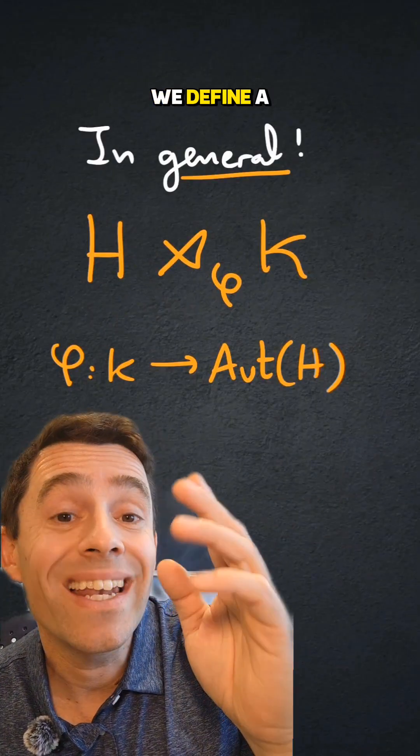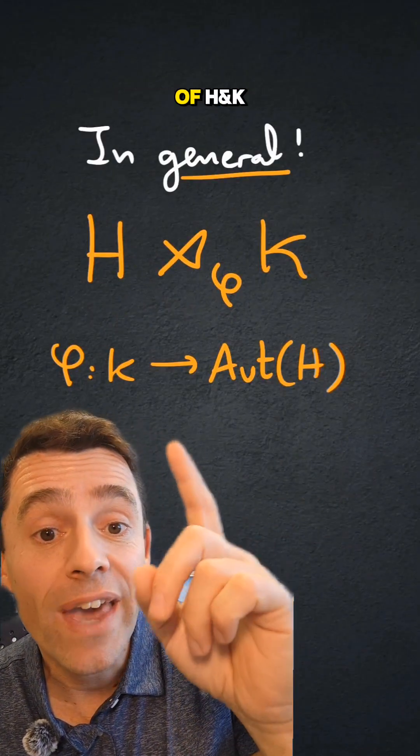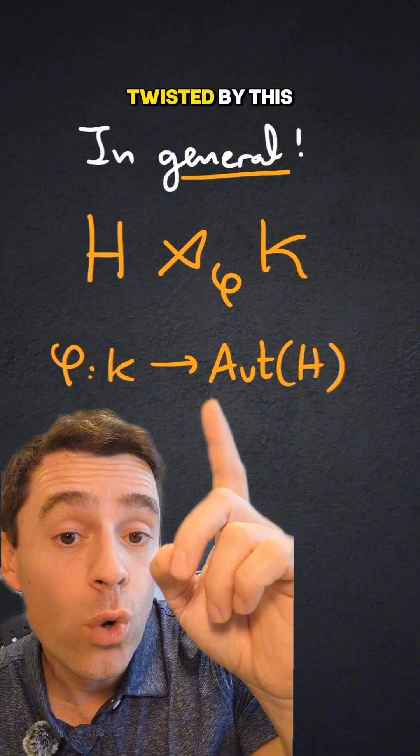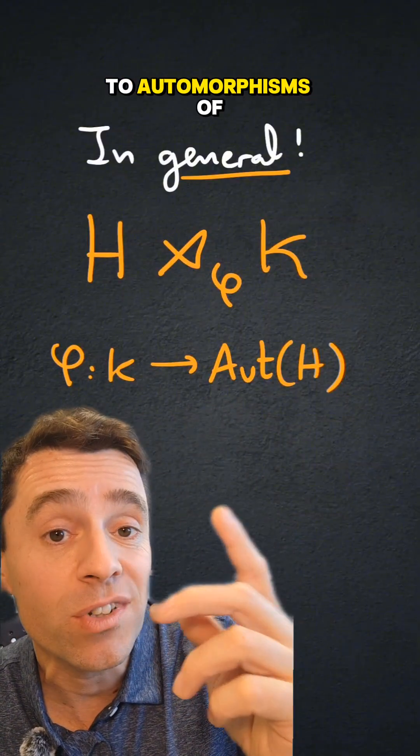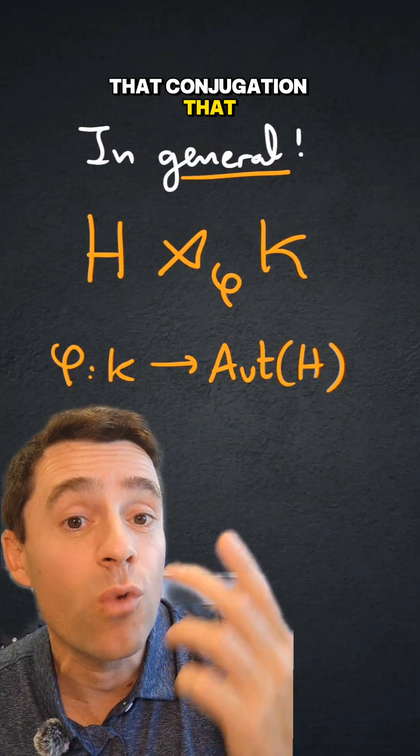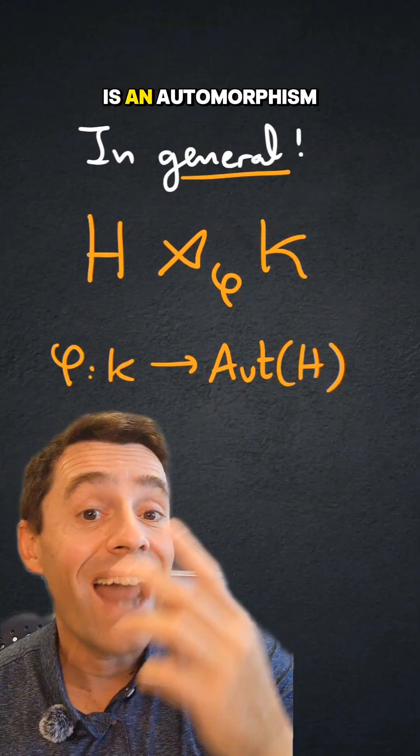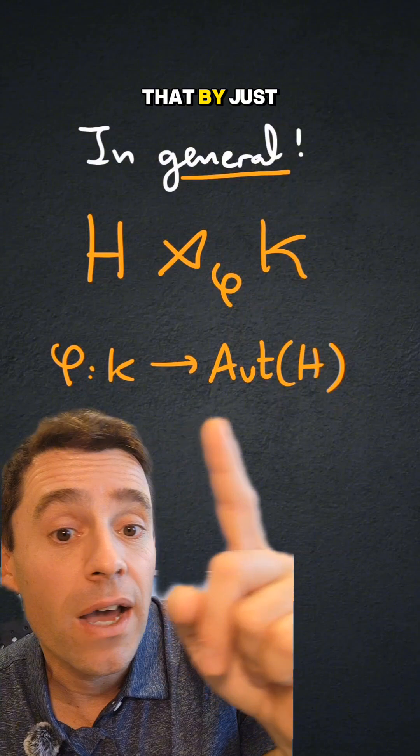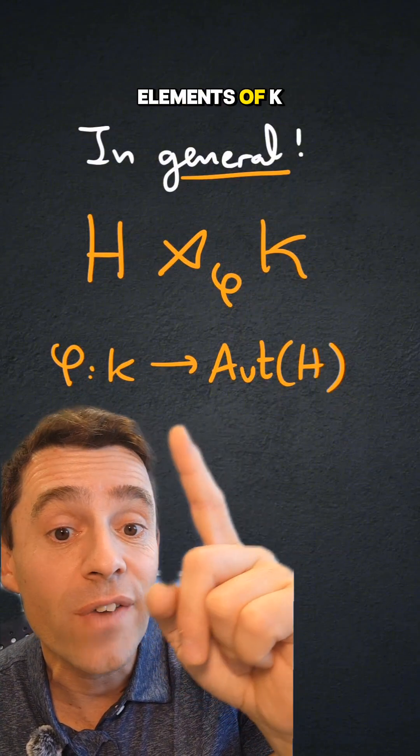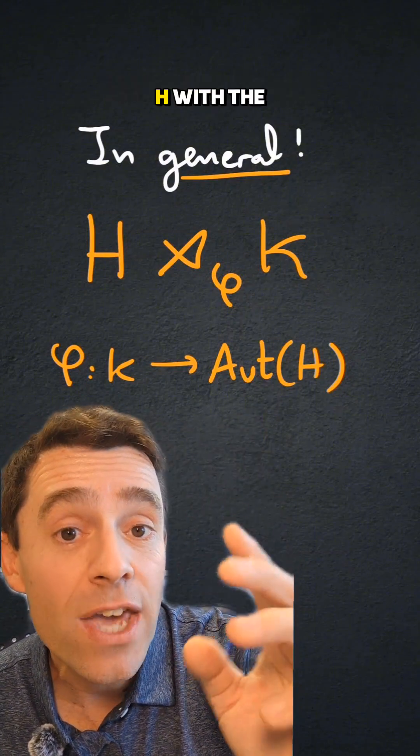So in general, we define a semi-direct product of h and k, twisted by this homomorphism from k to automorphisms of h. That conjugation that we were doing in s3 is an automorphism of the alternating group.